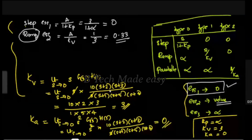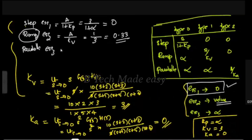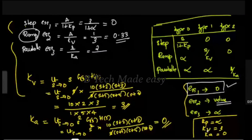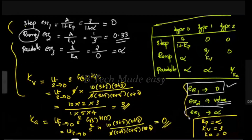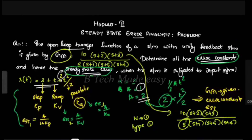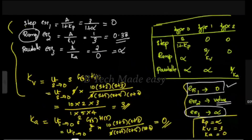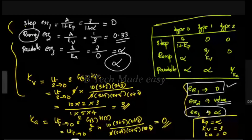For ESS3, the parabolic input gives ESS3 = A / Ka. Since Ka = 0, this gives infinity. In summary for this Type 1 system: ESS1 = 0, ESS2 = 0.33, and ESS3 = infinity.